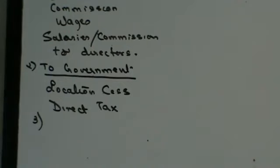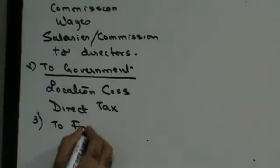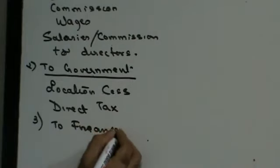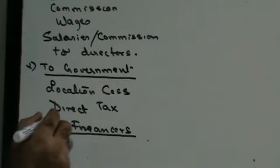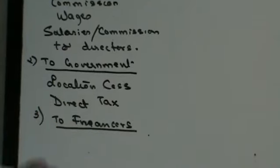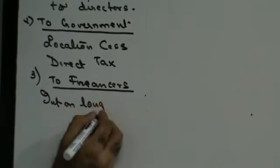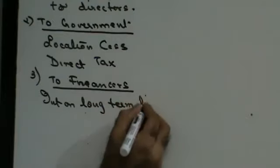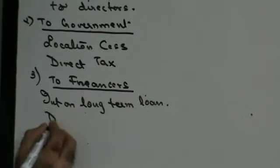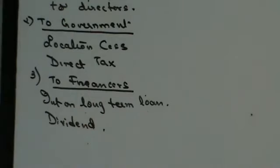The next section of society that is going to be benefited are the finances. They are going to receive their interest on long-term loans and dividend. These are the payments they will get which were not accounted for. By making a GVA, I can make payment to all those sections of society that were not accounted for.